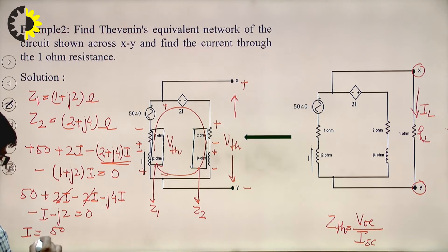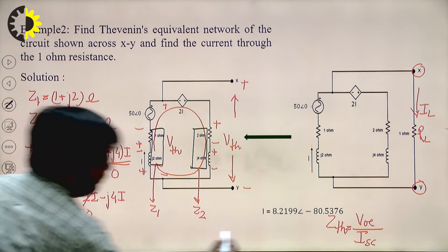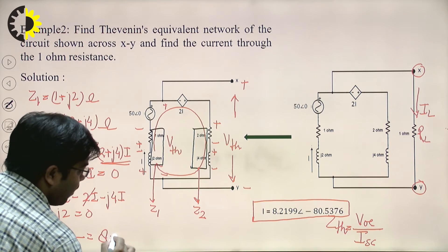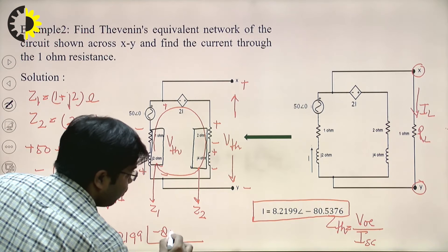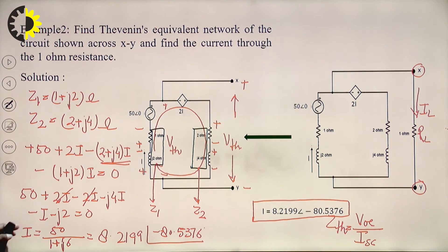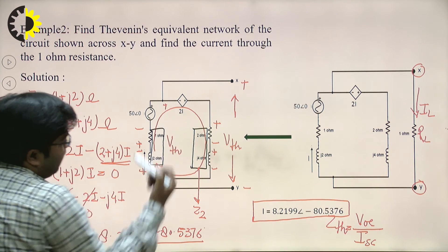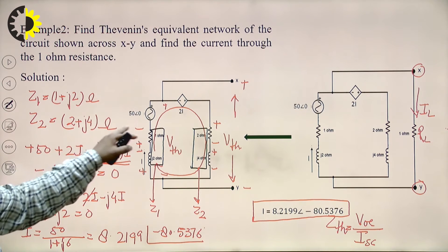After solving: I = 50 / (1 + j6), which gives I = 8.2199 at angle −80.54 degrees. Now multiply this current value with Z1 to get part of the V_TH expression.